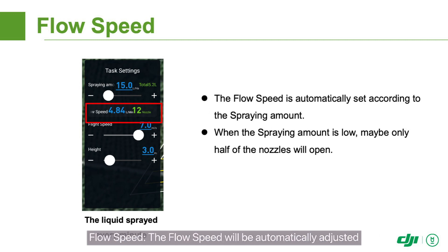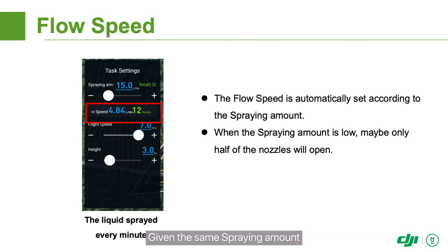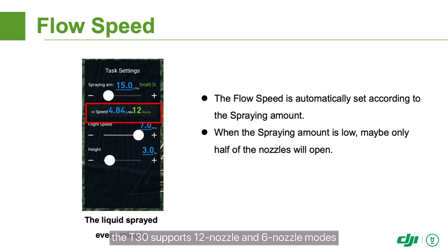Flow speed: The flow speed will be automatically adjusted based on the set flight speed after the spraying amount is set. Normally, the higher the flight speed, the higher the flow speed and vice versa. The number of open nozzles is determined based on the flow speed. Given the same spraying amount, fewer nozzles will open at a lower flight speed and vice versa. The T20 supports 4-nozzle and 8-nozzle modes. The T30 supports 12-nozzle and 6-nozzle modes.